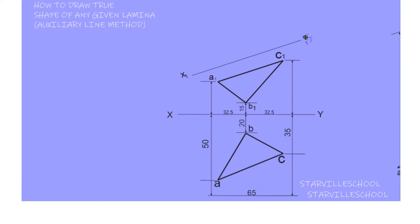Next we have to draw perpendicular lines from point A1 through the X1Y1 line. With your ruler and pencil — you can use your set square as a guide — you have to draw perpendicular lines through A1.